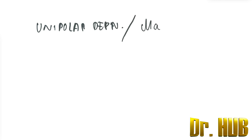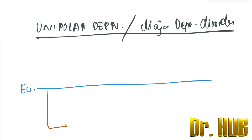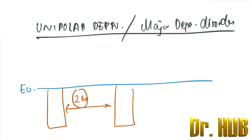Now let's break down each disorder. The first is unipolar depression, also known as major depressive disorder. There is a presence of euthymia, which leads to a depressive episode, and then later there will be another depressive episode. There will be at least a two-month gap between episodes, and each episode will be for two weeks or more. This pattern continues over one year.